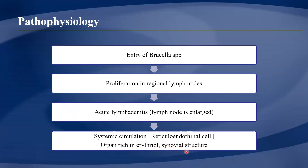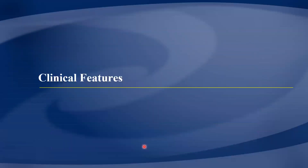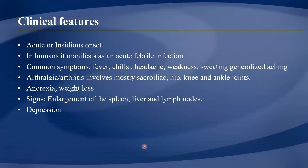Brucella also migrates to organs rich in erythritol, which is a substance that attracts the bacteria. In humans, erythritol is found in the synovial areas — the joints — which is why inflammation commonly occurs there. In animals such as cows, erythritol is found in the placenta, which is why brucella causes abortion in cattle.